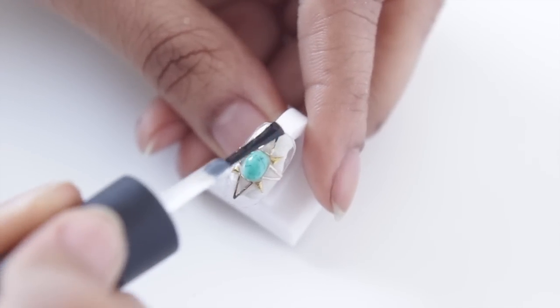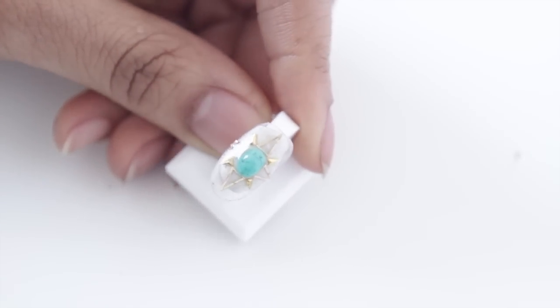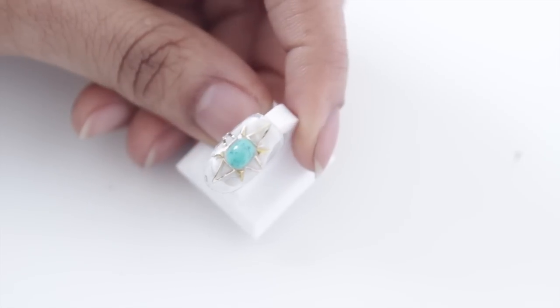And then finally, I just put on my top coat like normal. So after you cure that, you just remove the inhibition layer and you're done. So there you go guys, another nail hack.